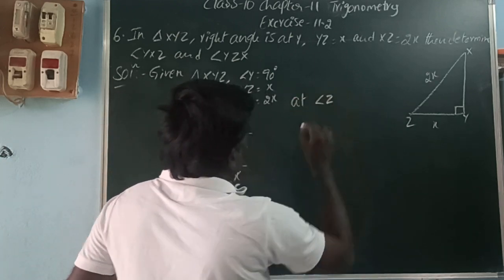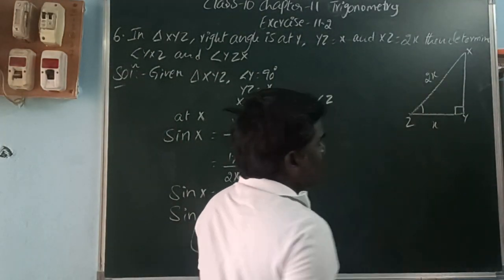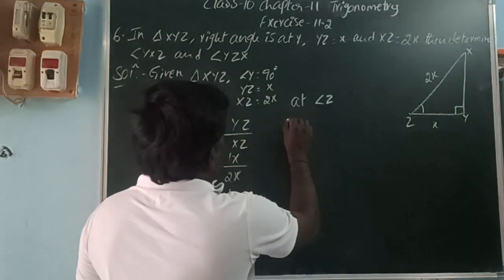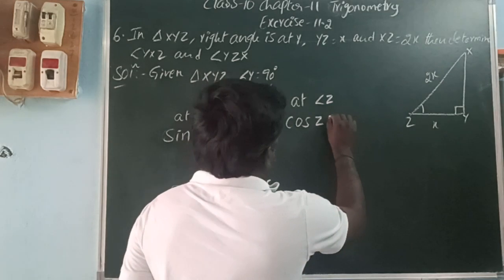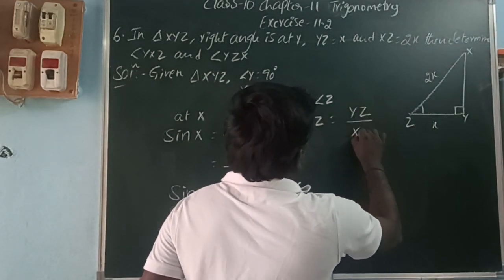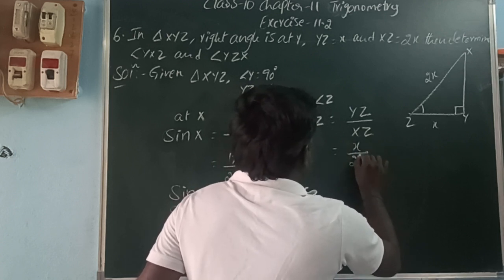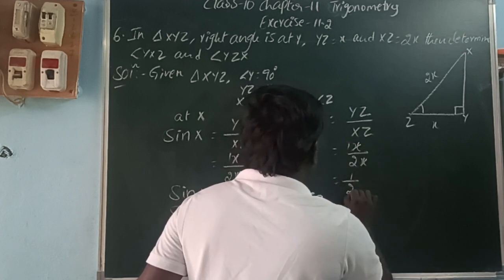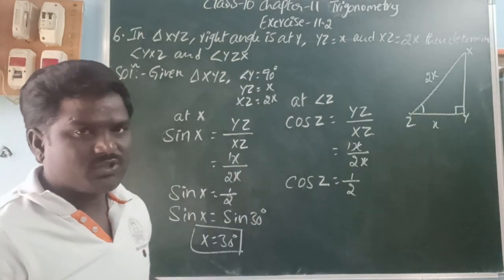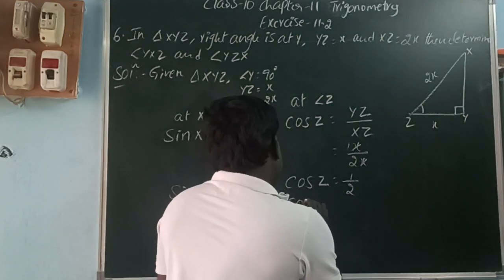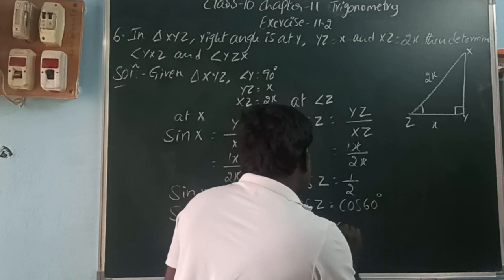Next, at angle Z, it is the adjacent and hypotenuse. So we take the cos ratio. Cos Z equals YZ by XZ, which is X by 2X. X cancels to give 1 by 2. So cos Z equals 1 by 2. In the cos ratio, cos60 equals 1 by 2. So cos Z equals cos60, therefore Z is equal to 60 degrees.